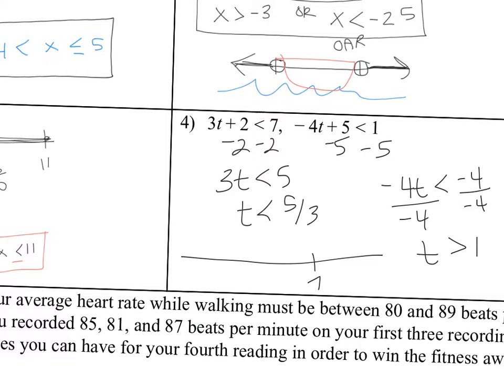If I graph this, 1, this is 1 greater than 1, and 5 thirds is greater than 1. So this is actually an and. This is actually in between because it's t is less than 5 thirds and t is greater than 1. So this is actually an in between if you graph it. So you could actually write your answer as 1 is less than t is less than 5 thirds.